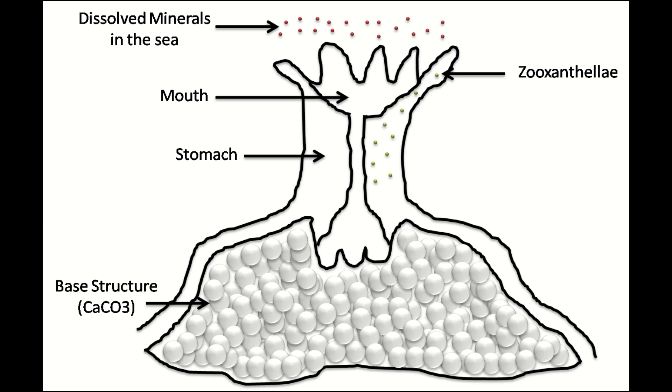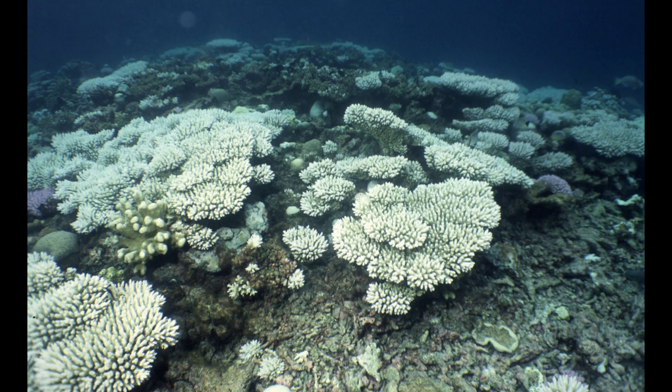Both individuals depend on each other, but that relationship can quickly fall apart. The temperature of the water needs to be within a certain range of roughly 18 to 28 degrees Celsius. If the temperature rises above that, the polyp can expel the zooxanthellae, which may result in an event called coral bleaching, where a colony of coral in which all the zooxanthellae have been expelled becomes white.